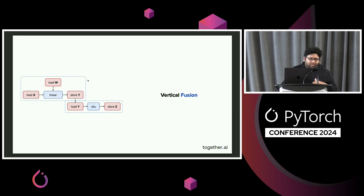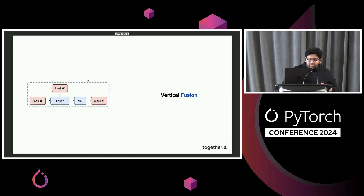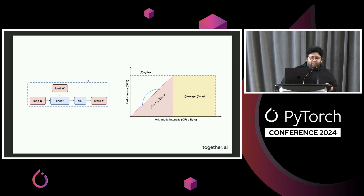Let me dive a little deeper on why vertical fusion matters. This is an abstracted example of doing SwiGLU. You load the activation, load the weight — two reads. Note that W is essentially a lot larger than X during decode. Then you compute the GEMM and store the value. Then you load it back again in the next kernel launch to do the elementwise SiLU. This can be completely absorbed into a single fused call, fusing the GEMM and the epilogue — saving one read and write. What that gets you is pushing arithmetic intensity above the roofline and getting more performance out of it.